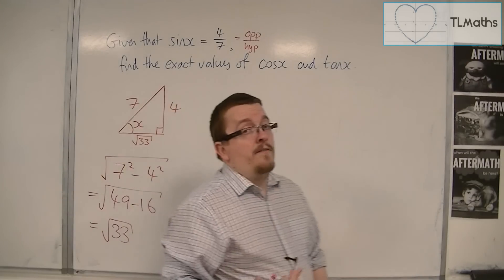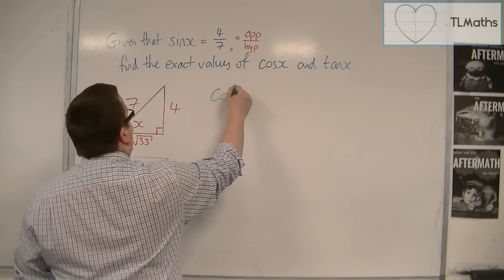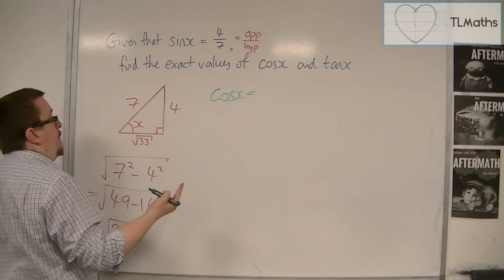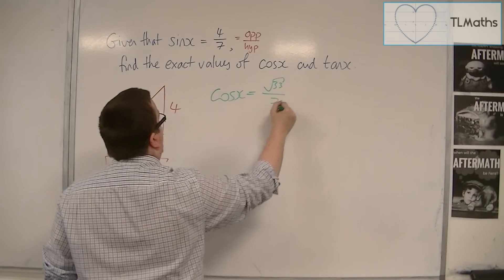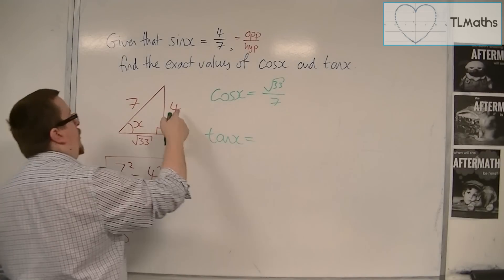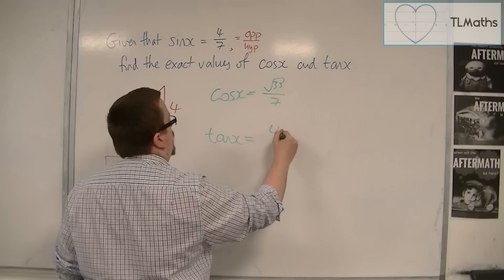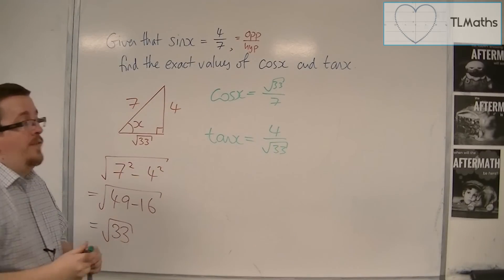Now that I have an adjacent, I can then say, well, cos(x) is adjacent over hypotenuse, and so that's root 33 over 7. And tan(x) is opposite over adjacent, so 4 over root 33. And these are the exact values.